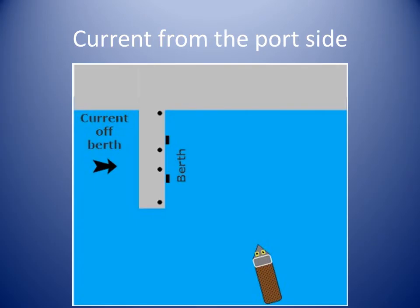Every time we do a berthing or unberthing, the external forces on the boat can be different on the day. In this diagram, the helmsman has to maneuver the boat with a current on her port side, pushing her boat away from her berth. This is a straightforward maneuver, provided the boat has enough power to match and just surpass the speed of the current.